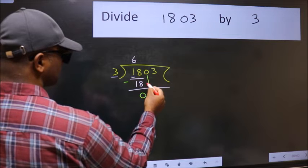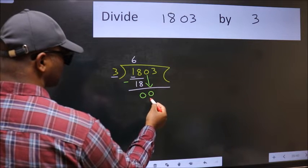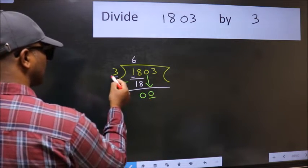After this, bring down the beside number. So, 0 down. Now, here we have 0 and here 3.